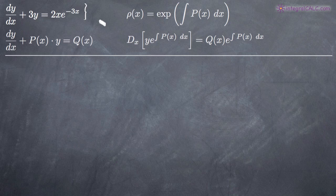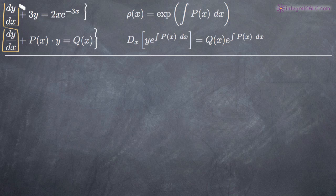The first thing we need to confirm is that it is in fact a linear differential equation. The way that we do that is by making sure that it is in the form of this first formula here. In order to be a linear differential equation, we need to have, first of all, dy/dx on the left-hand side — and of course we do in our problem. The second component is that you need y on the left-hand side, and it has to be y to the first power, not y squared or y cubed, but just y.